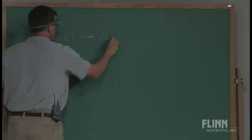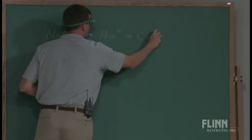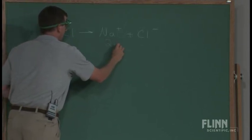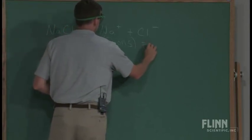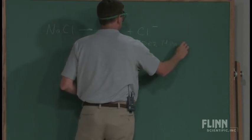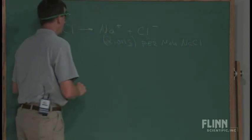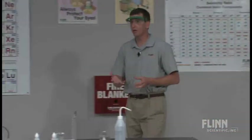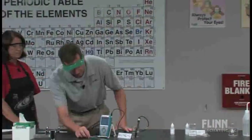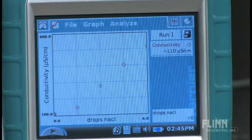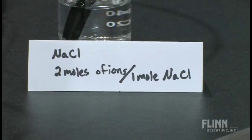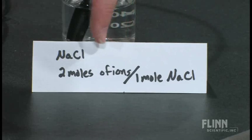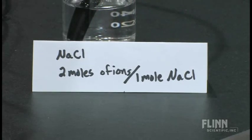When sodium chloride dissociates, it dissociates to Na+ and Cl-. That gives us a total of two ions per mole of sodium chloride. As we look and compare that to calcium chloride, we're going to notice that the graph for calcium chloride should look significantly different than this graph that we have for the sodium chloride. What we can see from this graph is the reason it has the slope that it does, is with sodium chloride we get two moles of ions from every one mole of sodium chloride that dissociates in water.